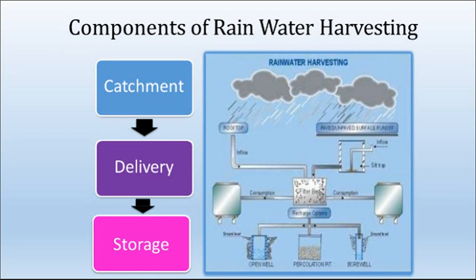We will move towards the components of rainwater harvesting. Rainwater harvesting has three major components: one is catchment, second is delivery, and third is storage. In any rainwater harvesting system, you will find these three elements as the predominant elements.